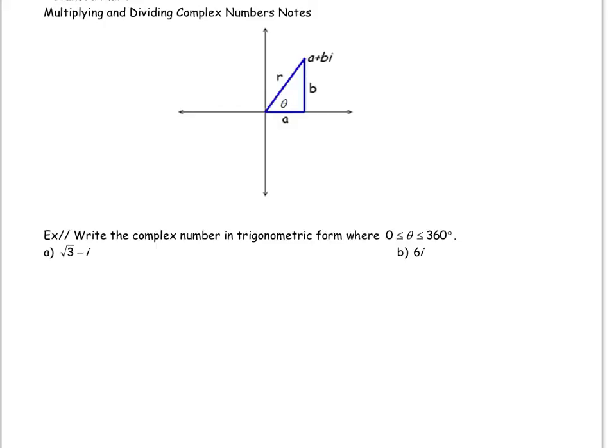Just recall that trig form requires us to write the angle like this. Trig form would be R times cosine of theta plus i sine of theta, whereas standard form we know looks like a plus bi.